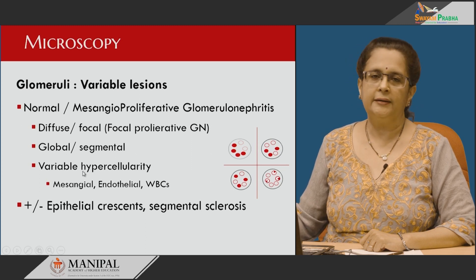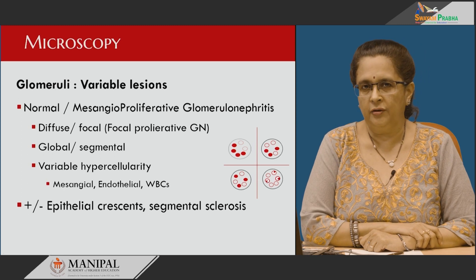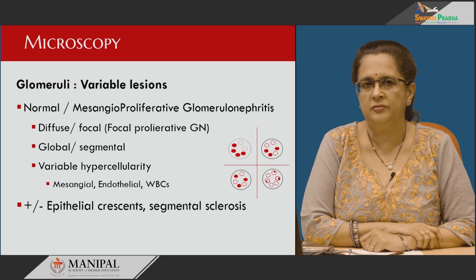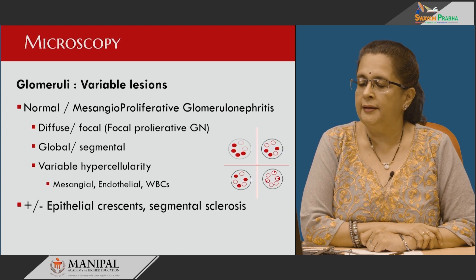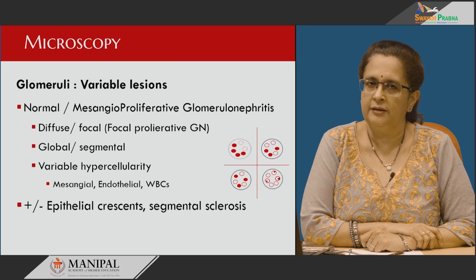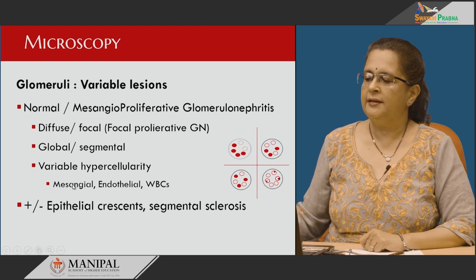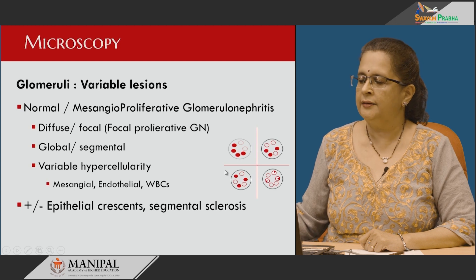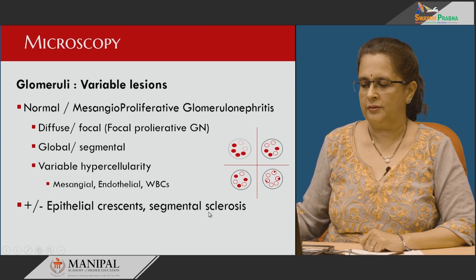The cellularity in the affected glomeruli is variable and involves mesangial cells, endothelial cells, as well as WBCs. Rarely, you can get epithelial cell proliferation within Bowman's space. Whenever areas of inflammation heal within the glomerulus, it gives rise to segmental sclerosis.